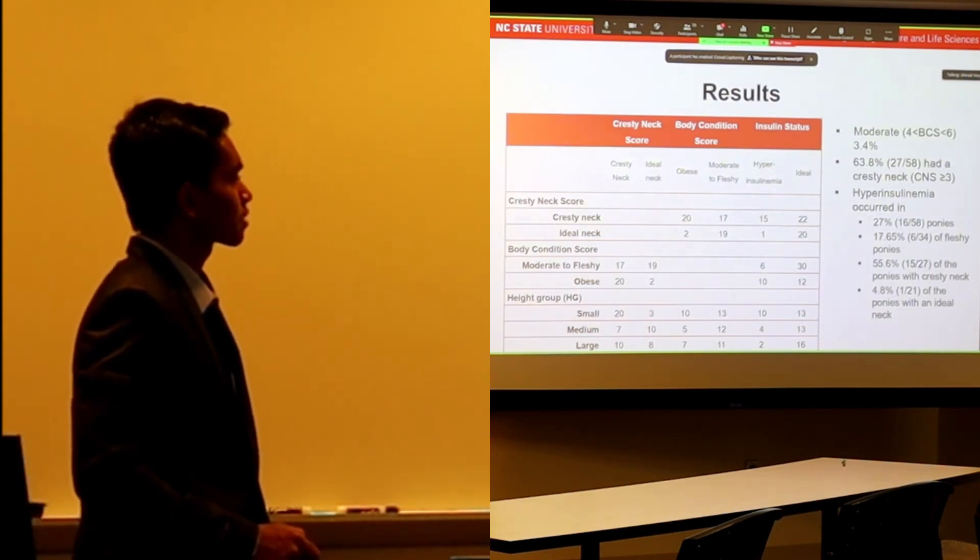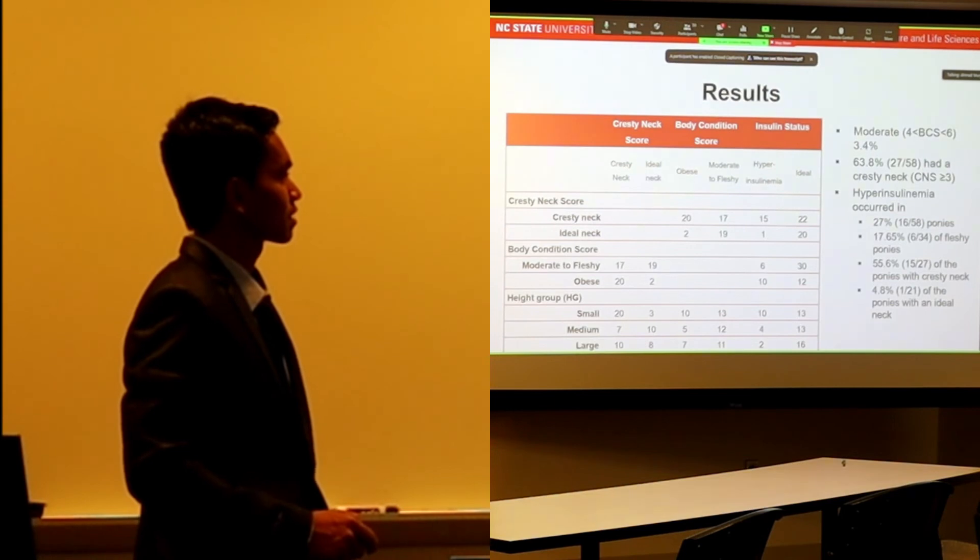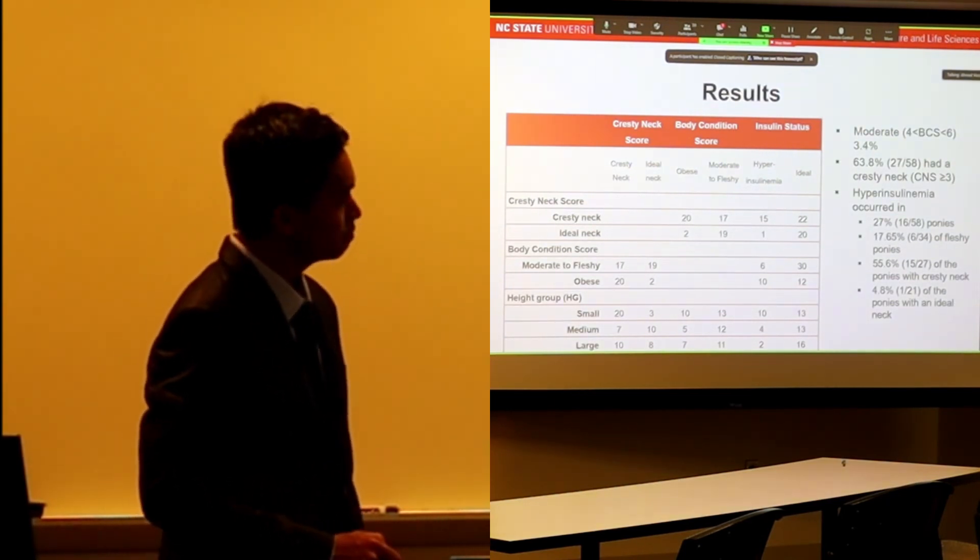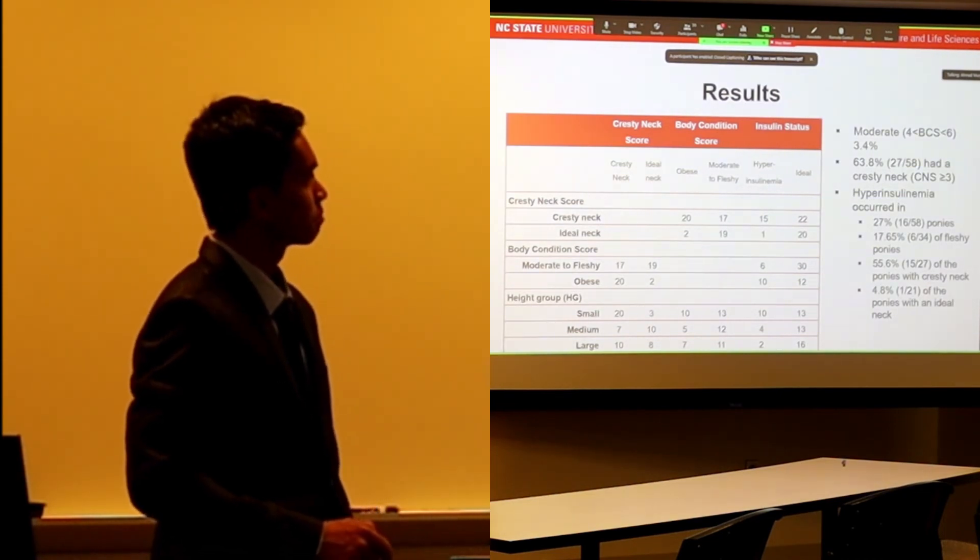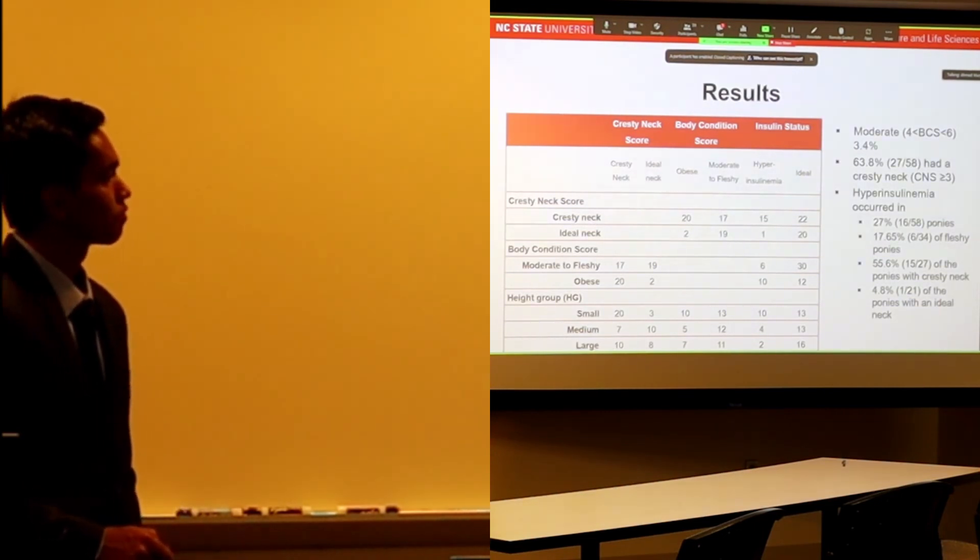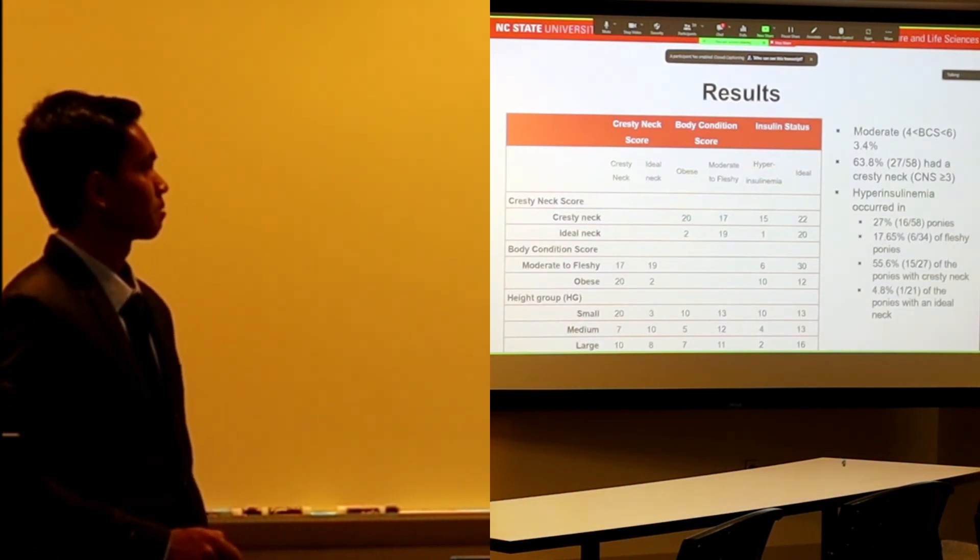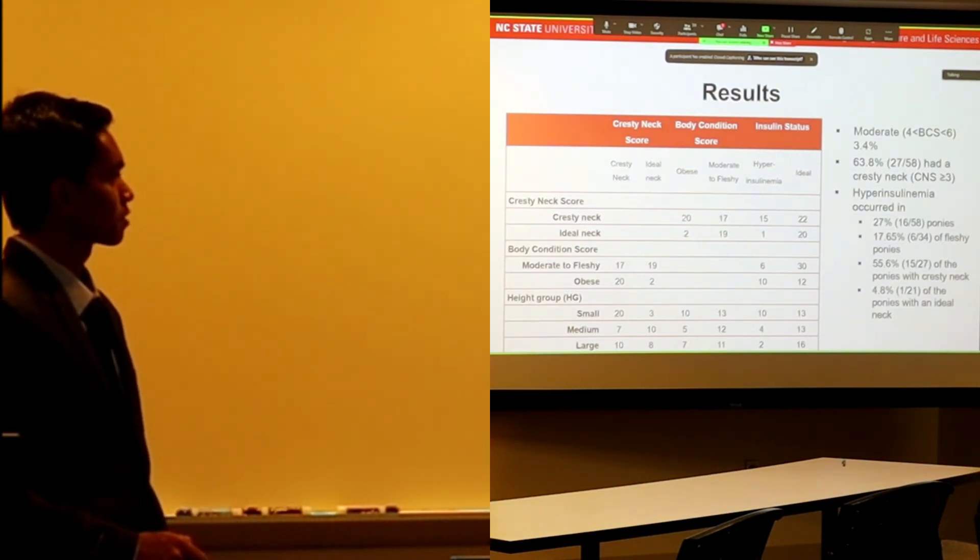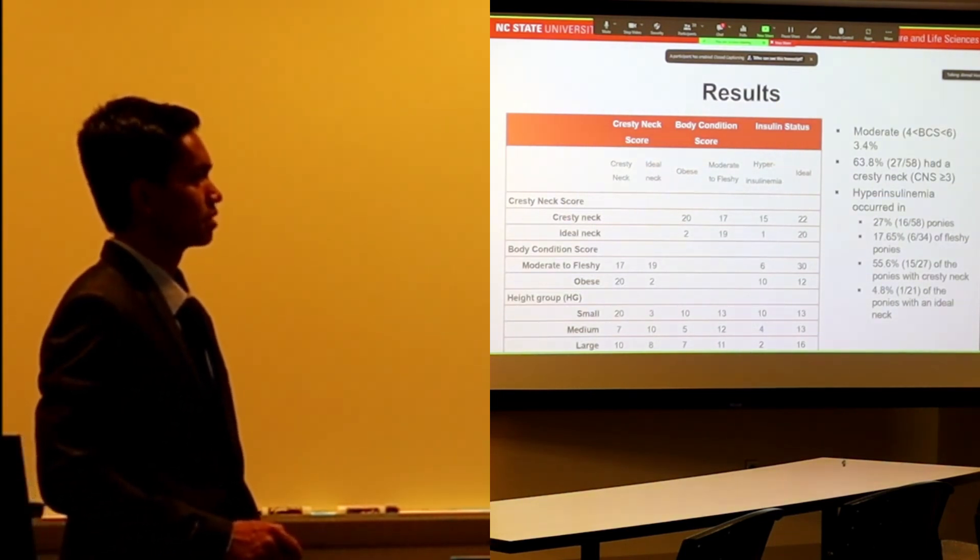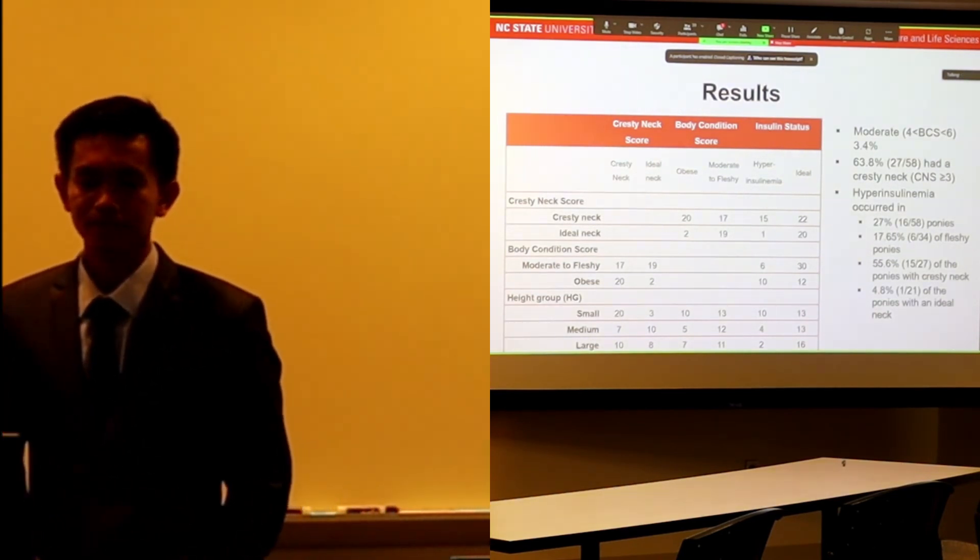This shows the state of ponies with cresty neck or ideal neck, moderate or fleshy. This table presents the number of ponies based on category. For example, the number 20 is the number of ponies with cresty neck that are obese, and so on.